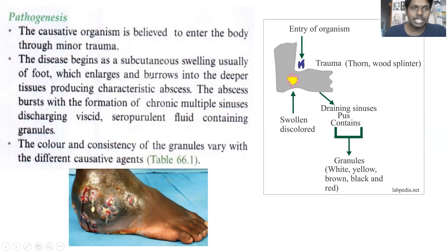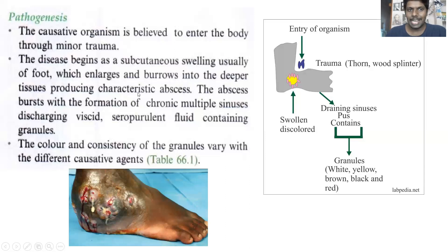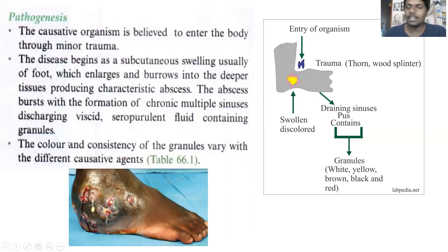The disease begins as a subcutaneous swelling, usually of the foot, which enlarges and burrows into deeper tissues, producing characteristic abscesses. The abscess bursts with the formation of chronic multiple sinuses, discharging viscid seropurulent fluid containing granules. The color and consistency of granules may vary depending upon the type of fungus infecting the leg.